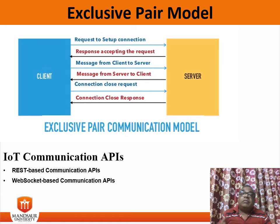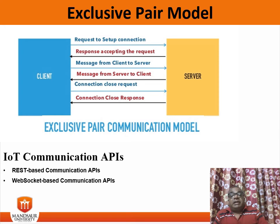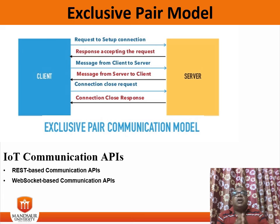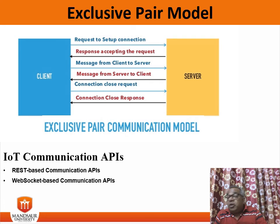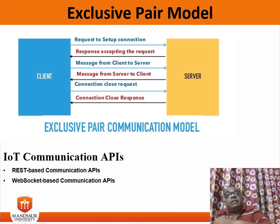The other IoT communication API is the WebSocket-based communication API. The WebSocket API allows bi-directional full duplex communication between the client and server. The WebSocket API follows the exclusive pair communication model, unlike the request-response model used in REST. The WebSocket API allows full duplex communication and does not require a new connection to be set up for each message. WebSocket communication begins with a connection setup request sent by the client to the server.